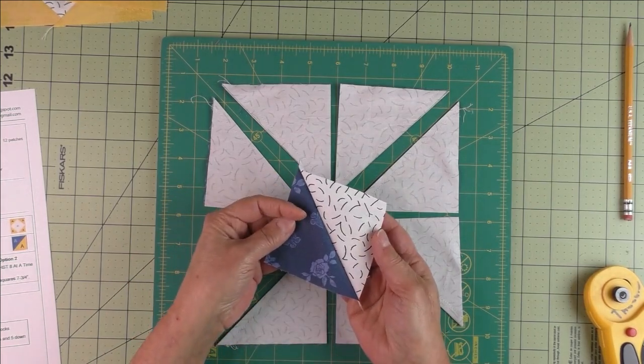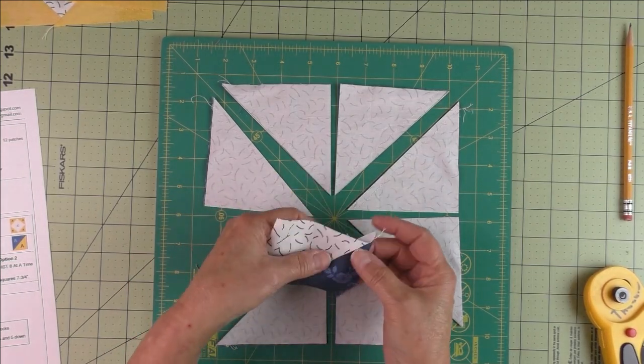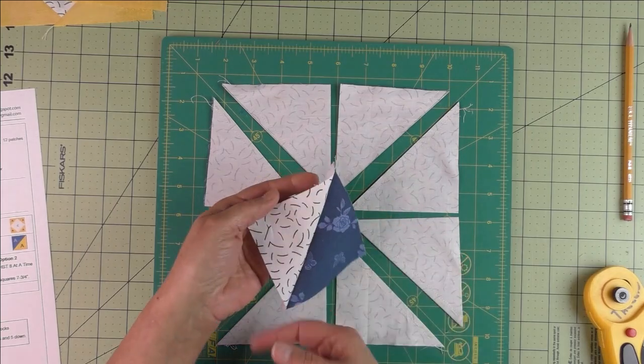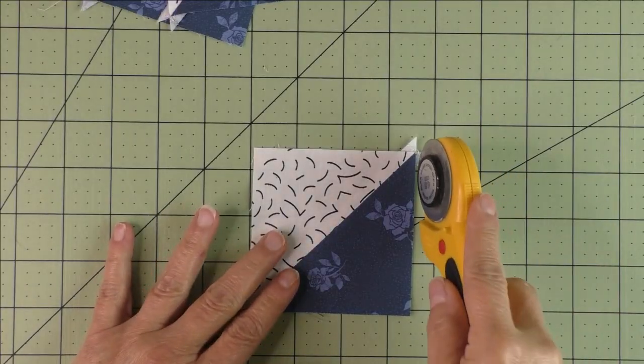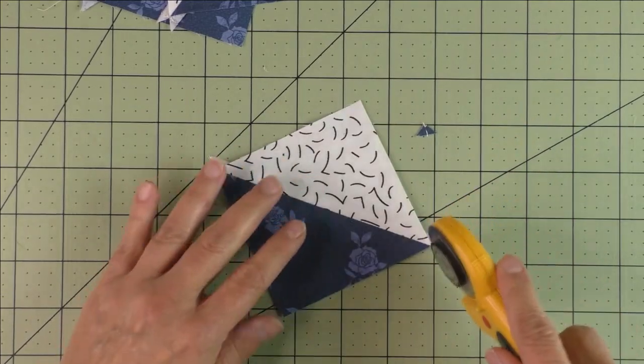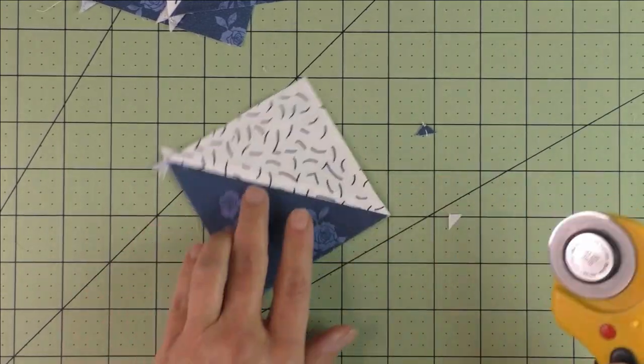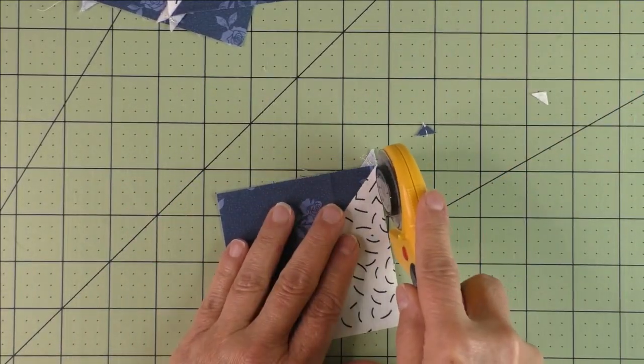Now we pull these apart and we have our eight half square triangles. Then we'll just press these open and we'll have nubs to cut off on each corner. Then I just take my rotary cutter and trim off these nubs. They're on either side of the diagonal.